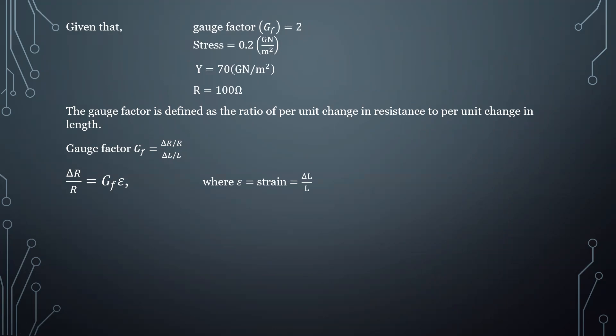So by knowing the gauge factor and strain, we can calculate the fractional change in the resistance. Because the question has given Young's modulus and stress, you can also find the strain. And when you put this strain value in this equation, you can find the fractional change in resistance.